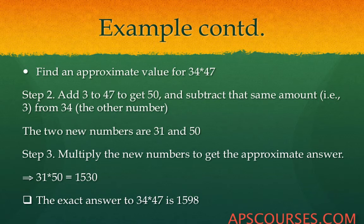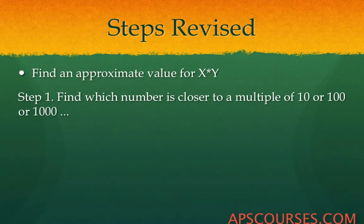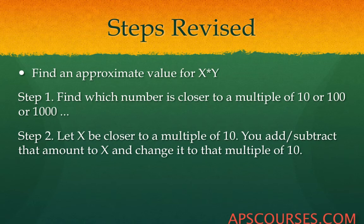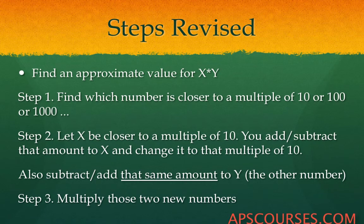When you start this calculation, you need the closest multiple of 100, so you can say to yourself the answer is approximately 1500 or of that sort. To summarize the steps: find an approximate value for x multiplied by y, identify which number is closer to a multiple of 10, 100, or 1000, change that number to the multiple by adding or subtracting some amount, perform the reverse operation on the other number, then multiply the two new numbers to get the approximate value.